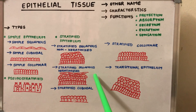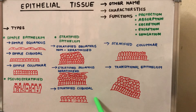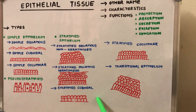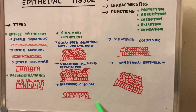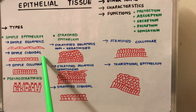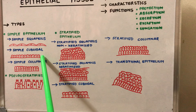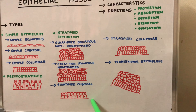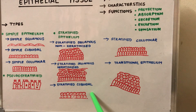The stratified cuboidal epithelium consists of two layers of cuboidal cells, whereas the simple cuboidal epithelium was made up of a single layer of cuboidal cells. It is present in large ducts like the sweat glands and the mammary glands.